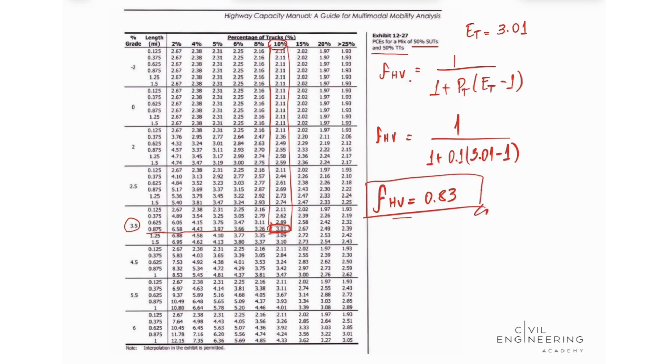Now that we found this value, we can plug this value into our equation for our volume flow rate. And this equals our demand divided by our peak hour factor times the number of lanes in one direction times our adjustment factor for heavy vehicles. So let's go ahead and plug in these values. So this is 3,200 divided by 0.85 times 2 times 0.83. And we're going to see that our volume flow rate is equal to approximately 2,268 passenger cars per hour per lane.